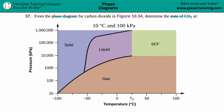Did I say 100 for the temperature? I meant 10 degrees Celsius, and then 100 for the kilopascal. So the 10, since it's in degrees Celsius, it's going to be an x value. And the 100 kilopascal — that's on the y-axis, so that's a y value.